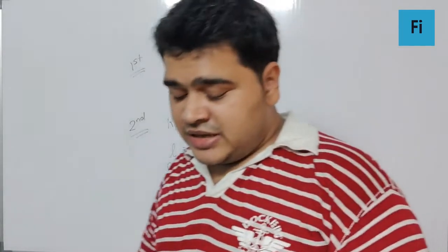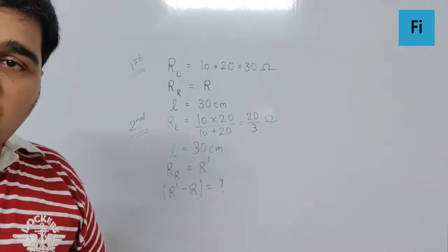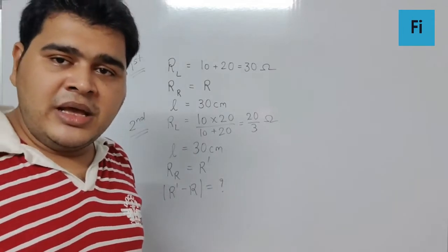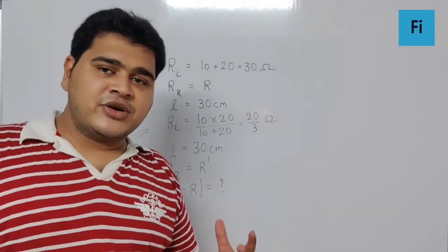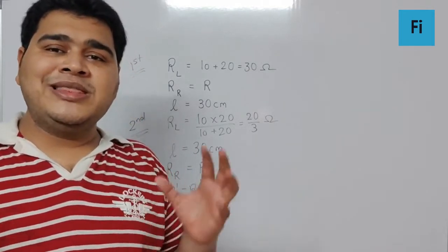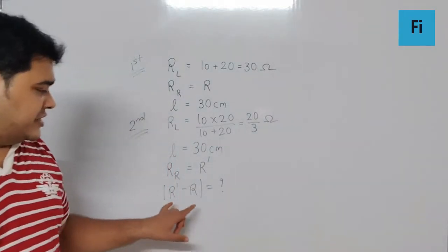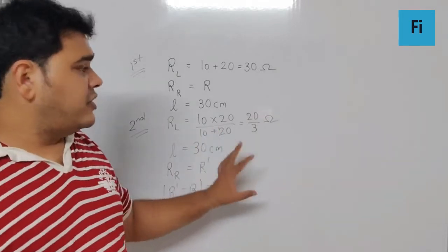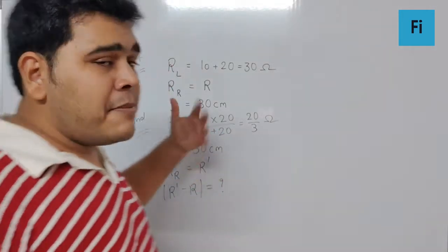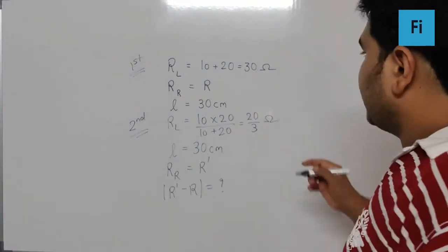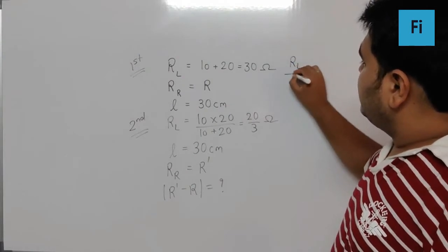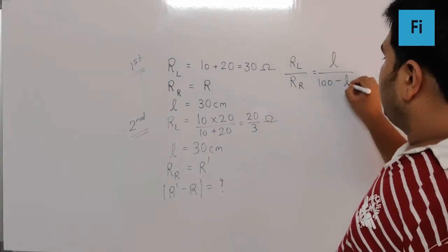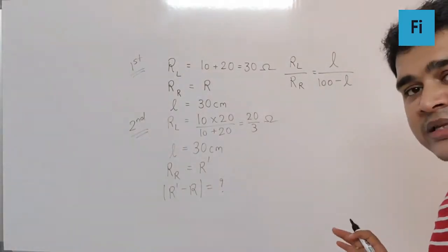We don't know whether the resistance will be increased or decreased, so I'm not assuming which is greater. Since I'm interested only in the magnitude, I'm taking the mod of the value. Now, comparing both cases, RL by RR equals L by 100 minus L.